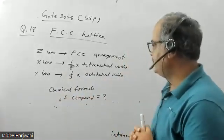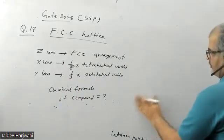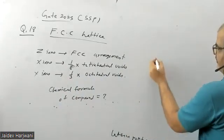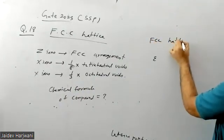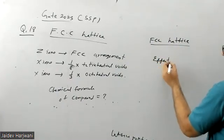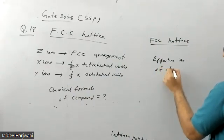As we know that in FCC lattice, in the FCC unit cell, the effective number is 4. The effective number of atoms in a unit cell is 4.